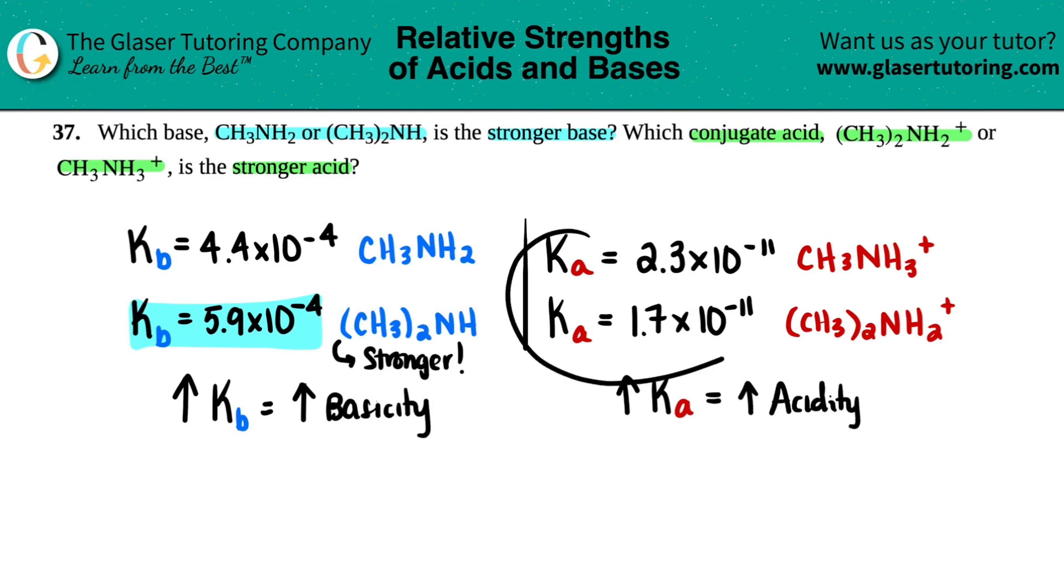So what we got to do is just look at these Ka values. 2.3 times 10 to the negative 11th versus 1.7 times 10 to the negative 11th. This one, the top one, beats it out just by a little bit. 2.3 is bigger than 1.7. So this is the bigger number. And in that case, this conjugate acid is the stronger acid.